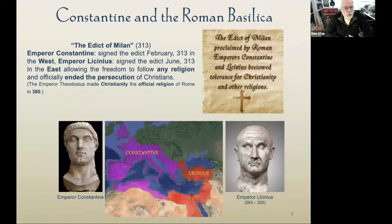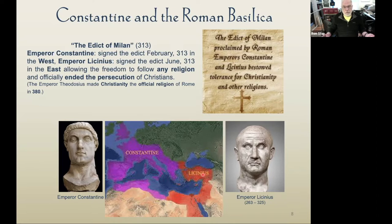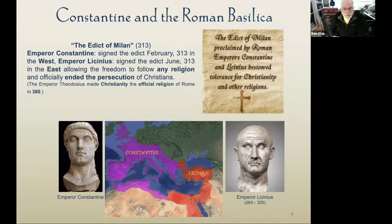Constantine won and took over the western part of the empire. His Battle of Milvian Bridge cemented him as emperor of the western Roman Empire, while Licinius came up through Diocletian on the eastern side. Both were emperors of the Roman Empire, and they signed the Edict of Milan, which proclaimed tolerance for Christianity and other religions. This was not where Christianity became the religion of Rome — Emperor Theodosius made Christianity the official religion of Rome in 380. But Constantine and Licinius were going to bump heads.